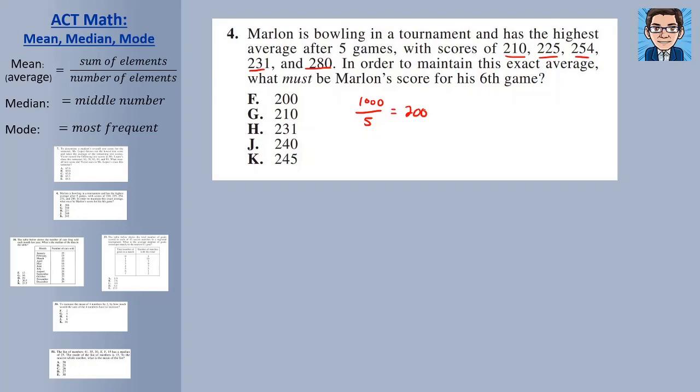Now the way that averages work, if you get your exact average on your next score, that's going to maintain the average. So we would need to get another 200 to match our average in order to maintain that exact average. So it's going to be F for 200. But if you didn't see that, you could also say, well, for six games, in order to have an average of 200, we have to have six times 200, or 1,200. So for six games, the total would need to be 1,200. We have 1,000 points so far, so that's another way of getting the 200.